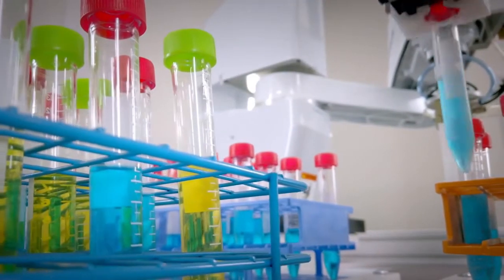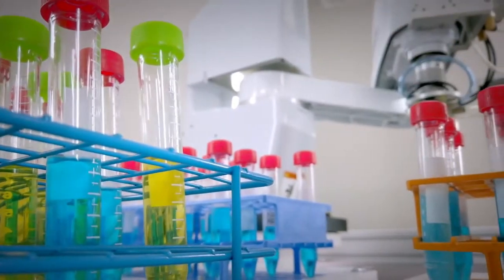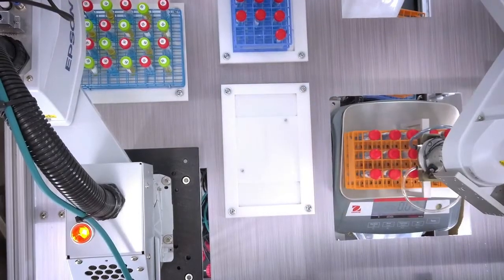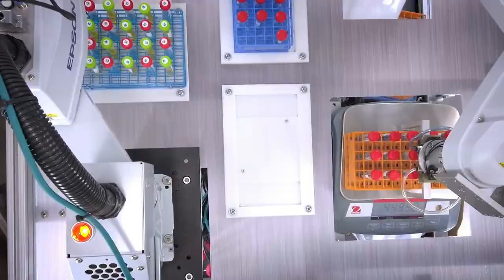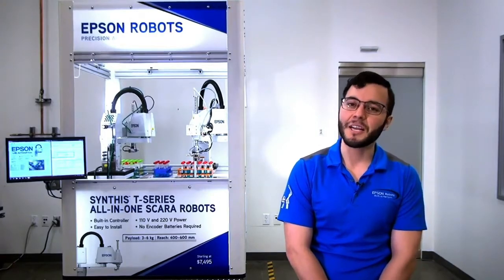The T6 takes the rack back to the scale and verifies that the rack is fully populated. Once the scale confirms to the system that everything is okay, then the T3 moves on to a vision inspection and vision-guided pick-and-place.